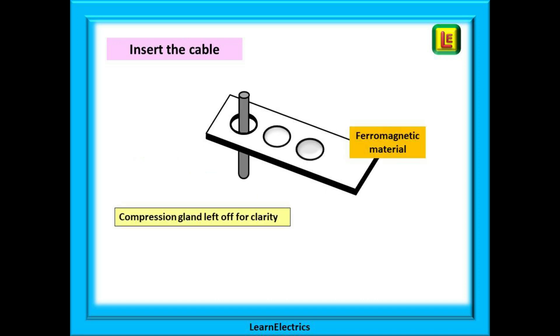We can install our 20 millimeter squash gland, insert our cable, job done. Except this is a single conductor entering a ferromagnetic enclosure and not what the regulations want. We have left the compression gland off in the next few drawings for clarity and to better show what is happening.